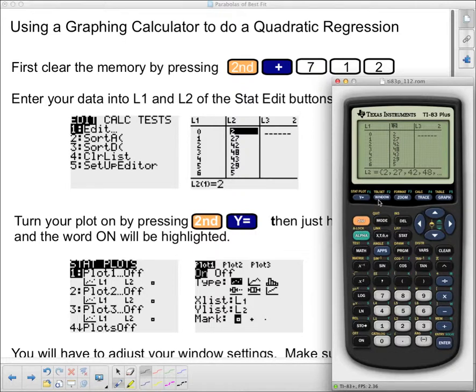Now to be able to graph this on the screen, we have to turn the plot on. And this just tells the calculator that we want it to actually graph the points we put on there. We press the second and the y equals, and you'll get this screen here. And then we have to see how it says they're all off. We're going to turn it on by pressing enter, and then enter again will highlight the on right in there.